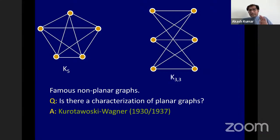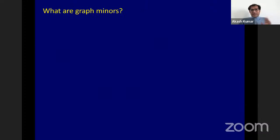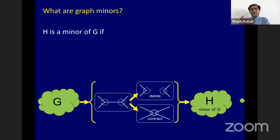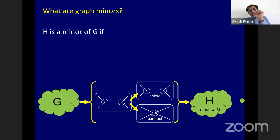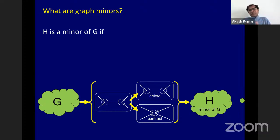Let's quickly see what graph minors are. I say that a graph H is a minor of graph G if you can obtain a copy of H by messing around with G. You are allowed to contract edges of G — take an edge and collapse its endpoints into a single mega-vertex — and you are allowed to delete edges of G. If there is a sequence of contractions and deletions that produces a copy of H at the end, I say that G contains H as a minor. It's a notion of containment.